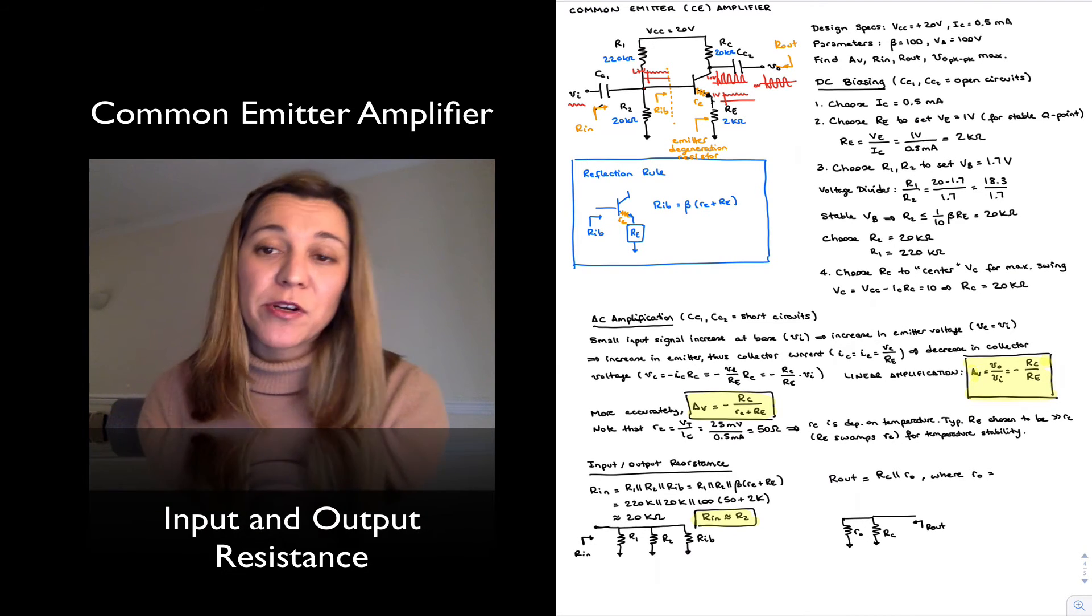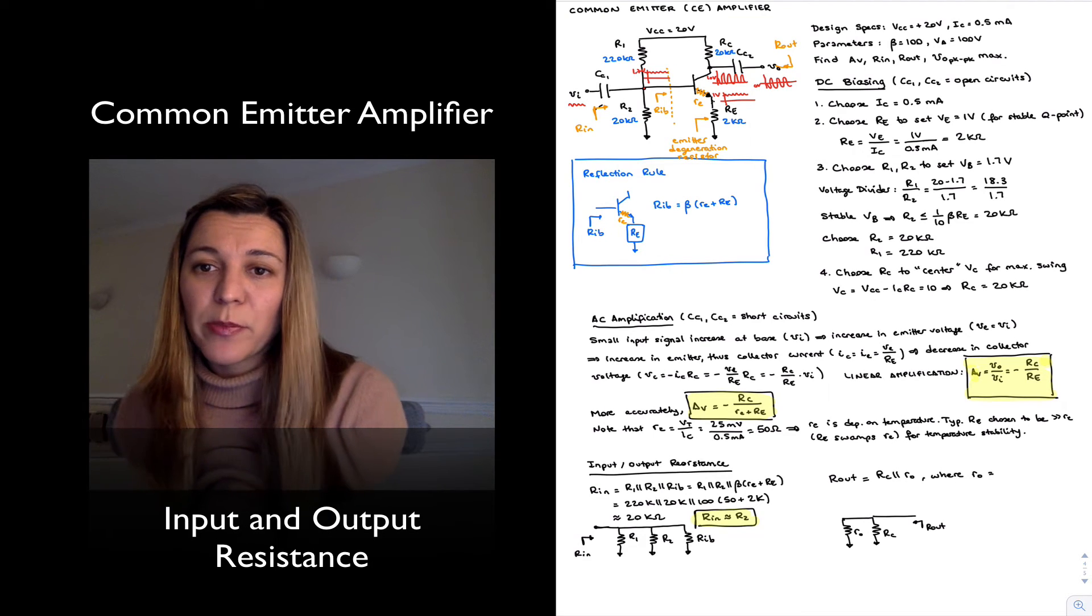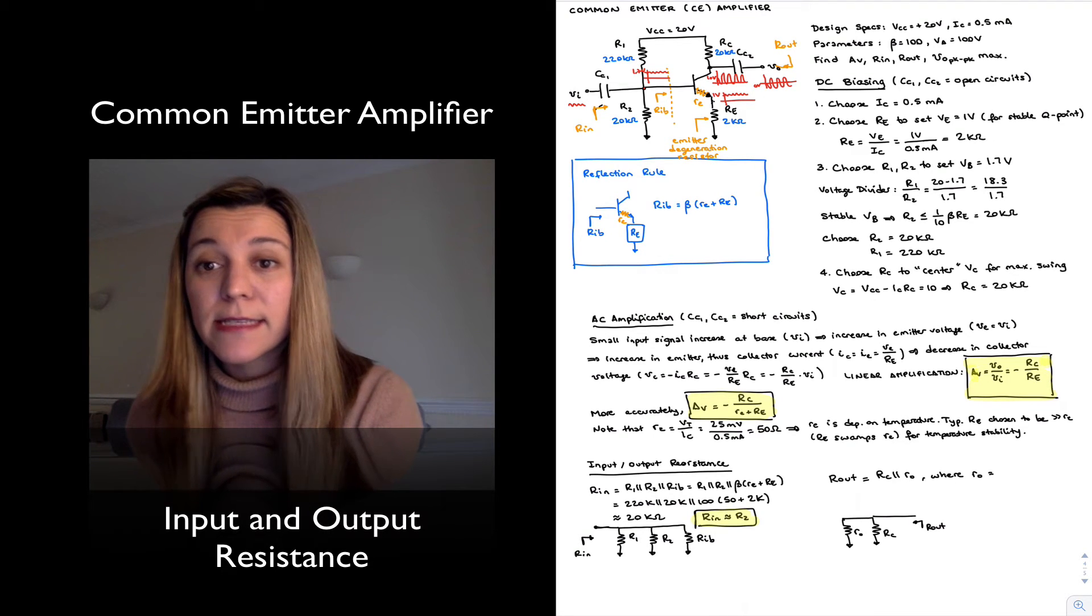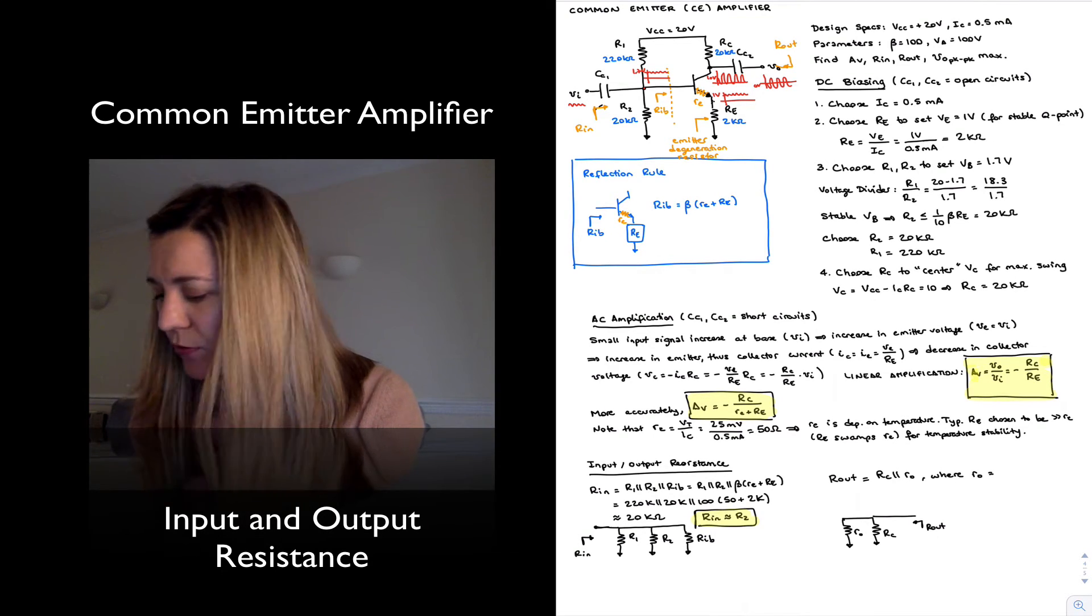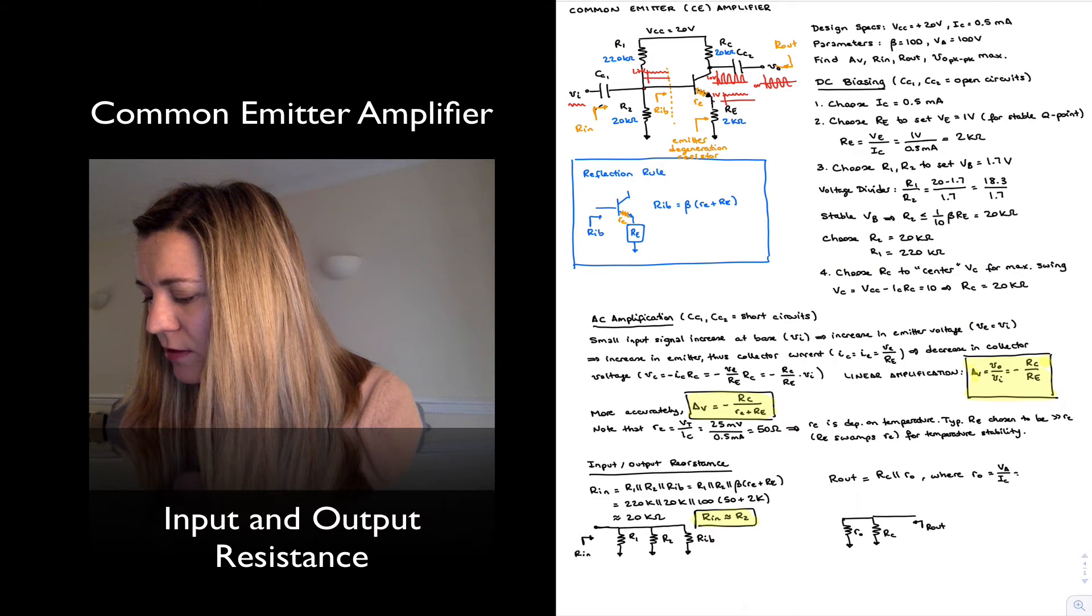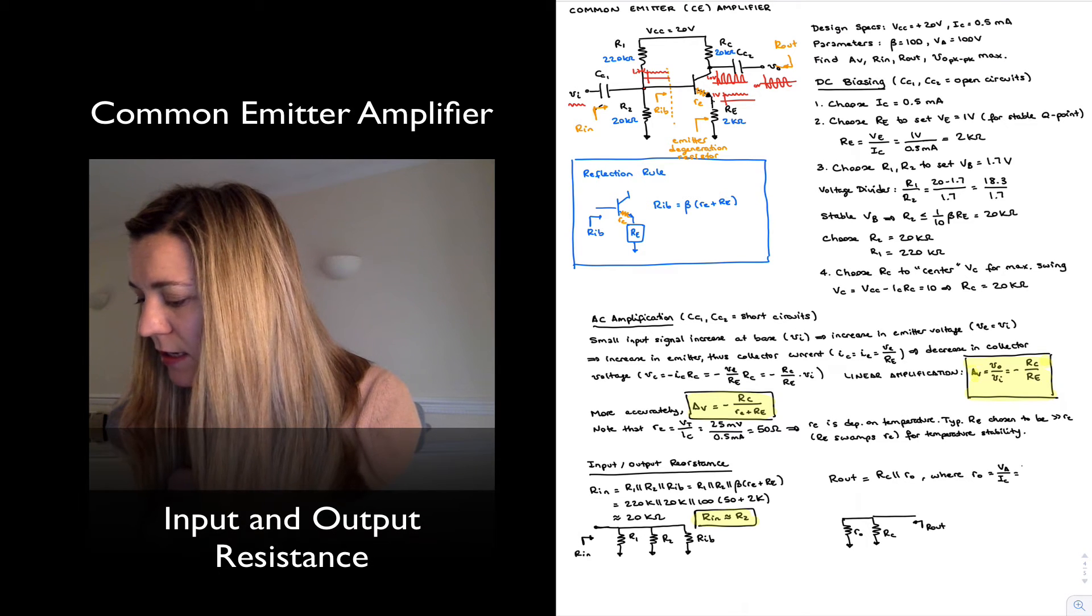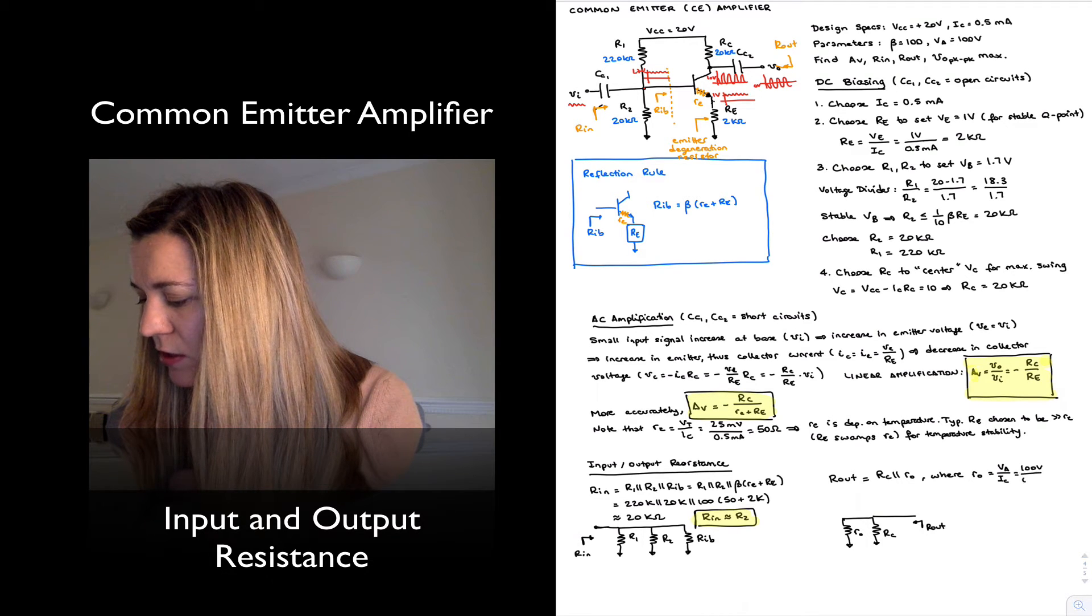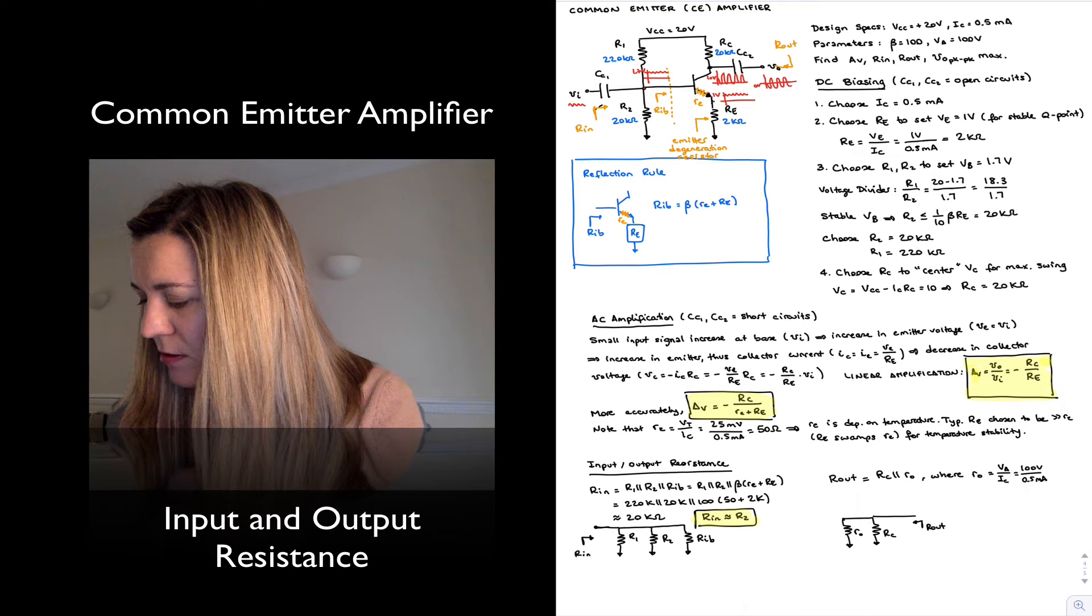And little ro is one of those AC parameters whose value is dependent on the DC bias point, and it's equal to the early voltage divided by the collector current. In this case, the early voltage is 100 volts, the collector current is 0.5 milliamps, and so that's 200 kilohms.